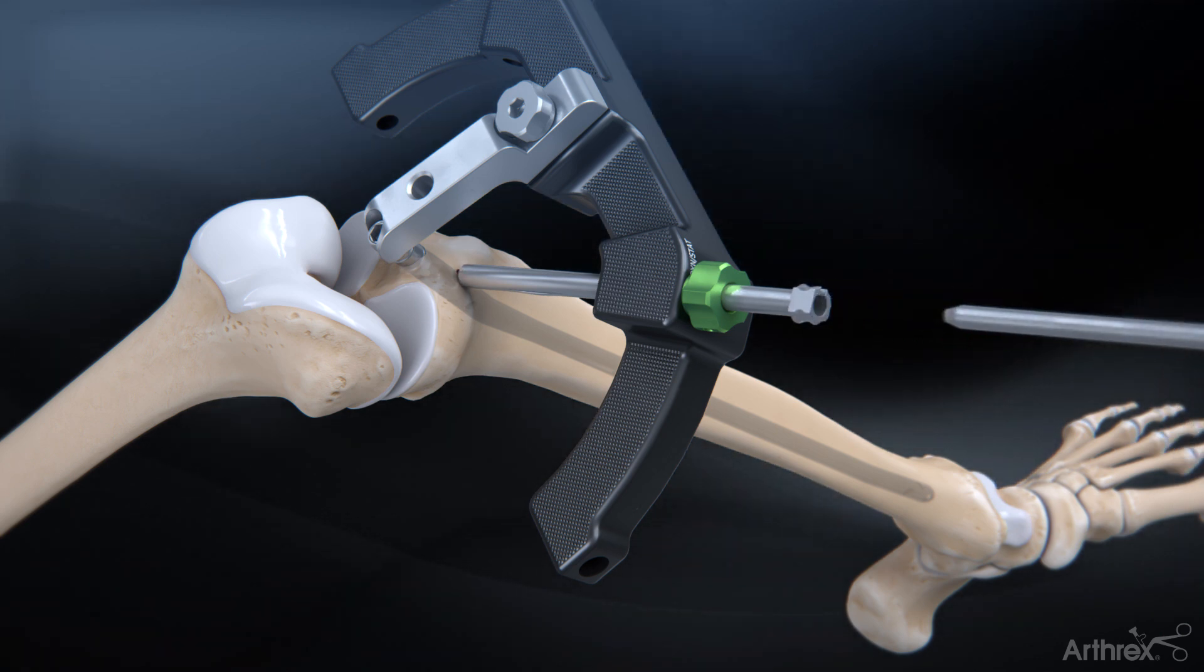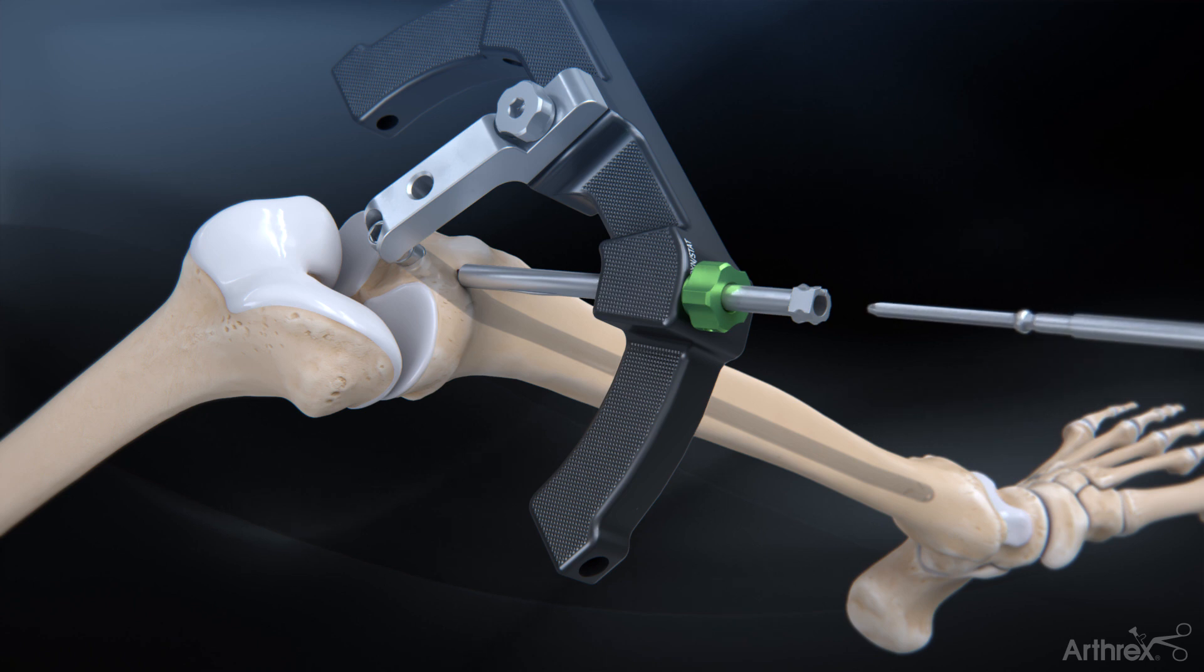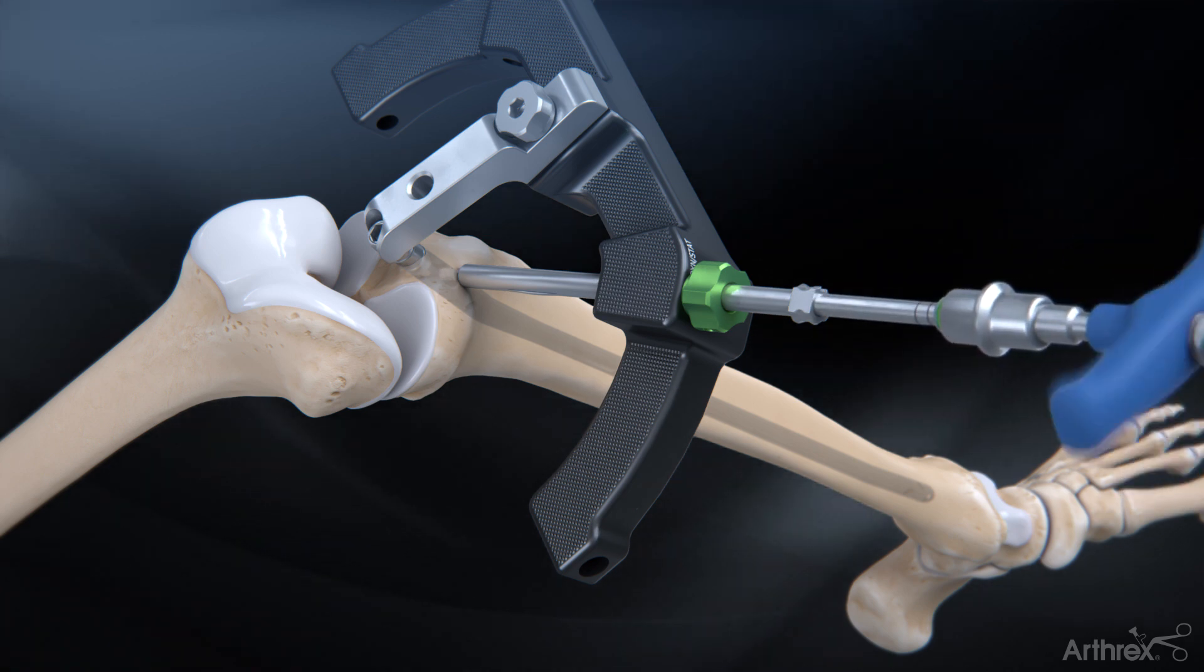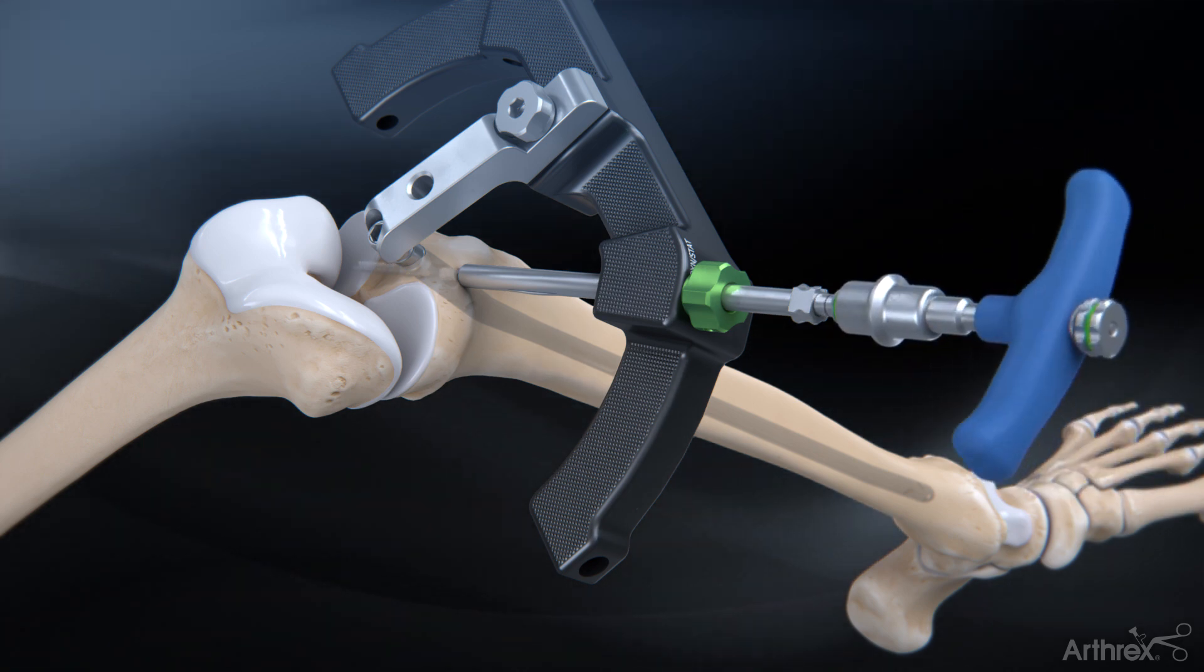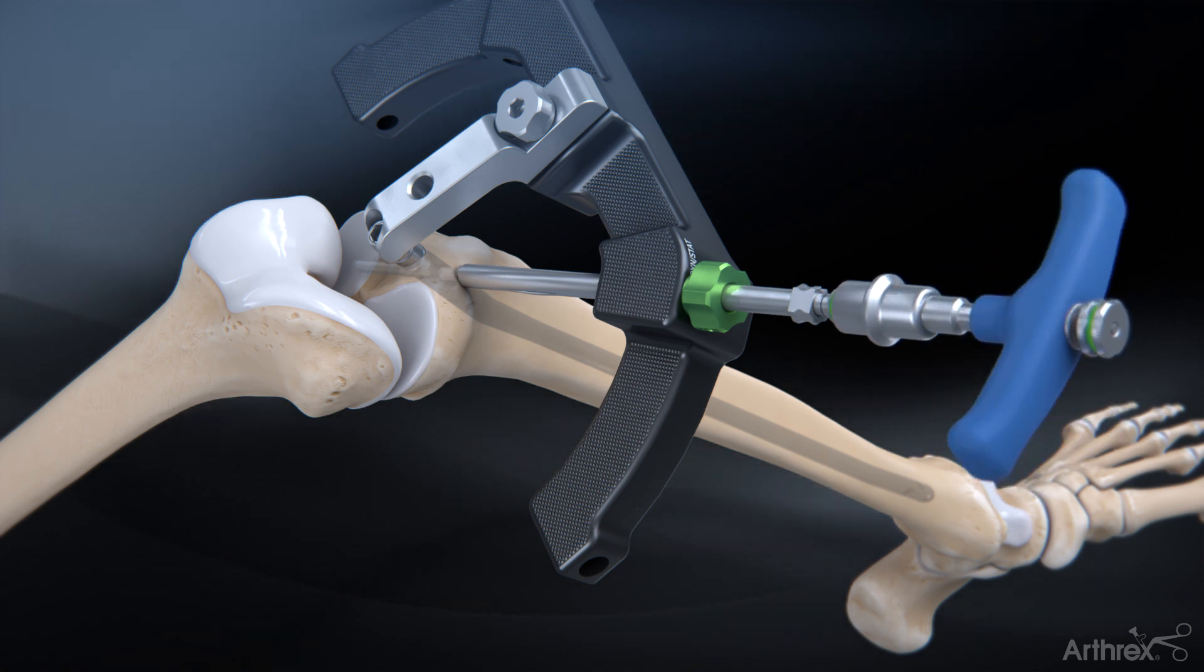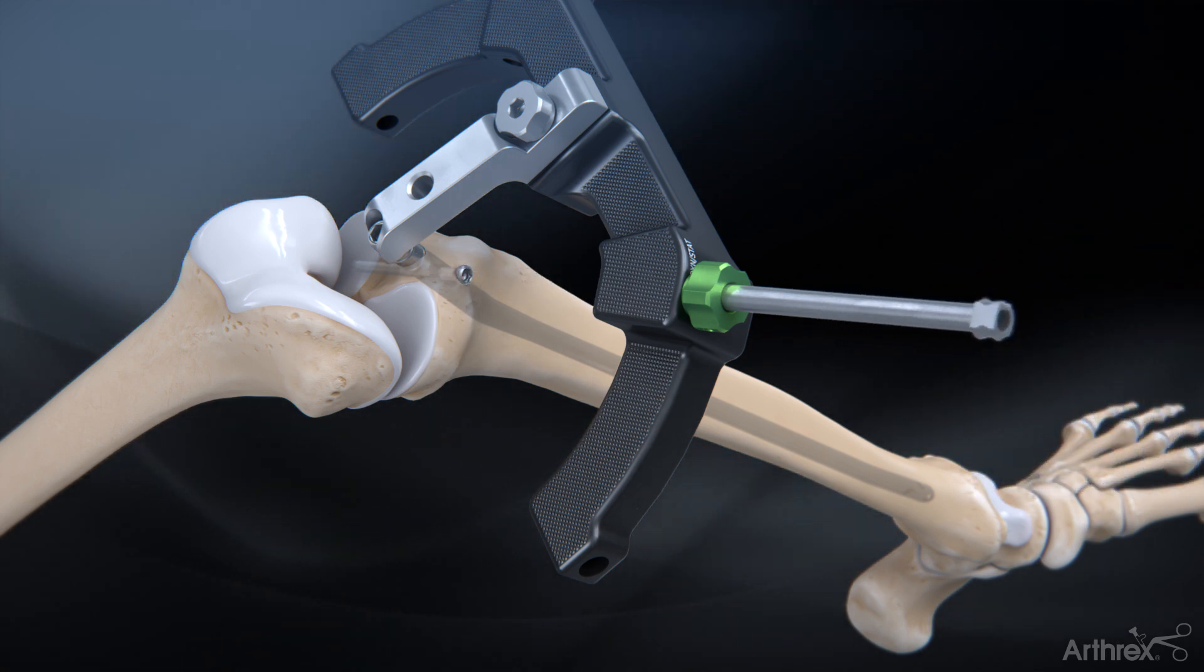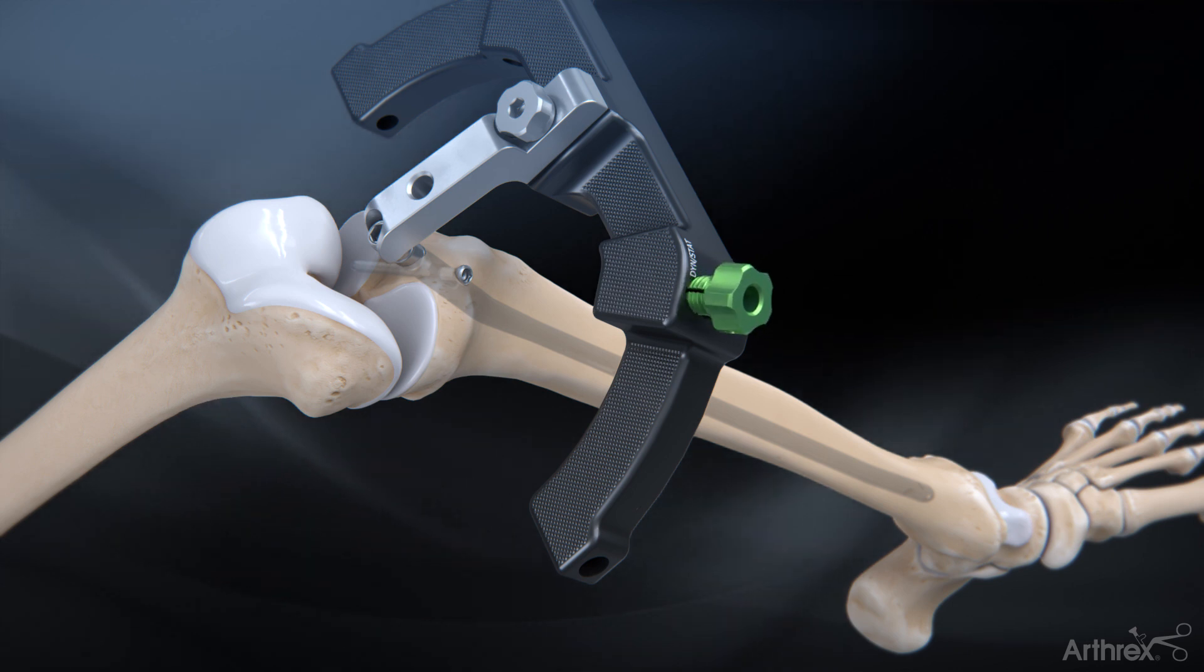Next, remove the drill guide. Insert the desired 5.0 mm cortical screw through the sheath using the captured screwdriver. Unscrew the capturing rod on the back of the t-handle and remove the screwdriver. Remove the sheath and locking collet nut.